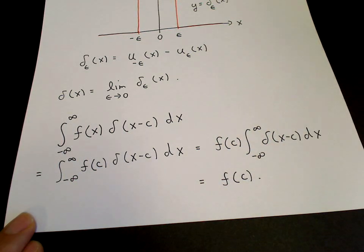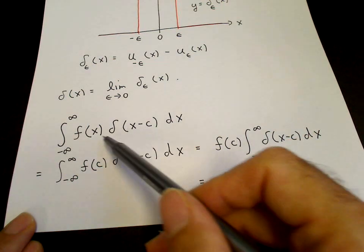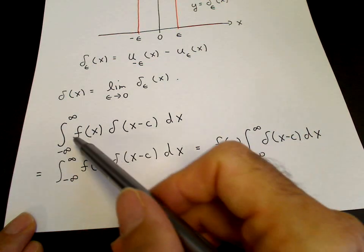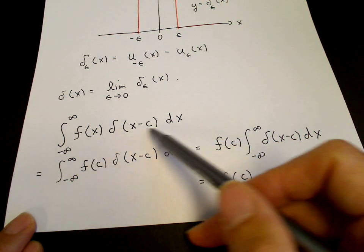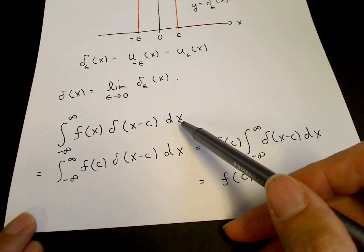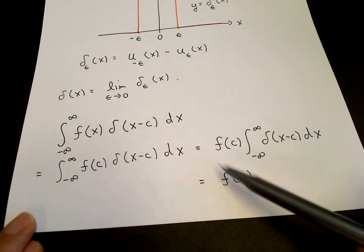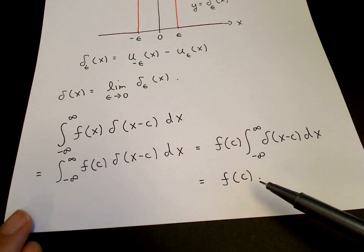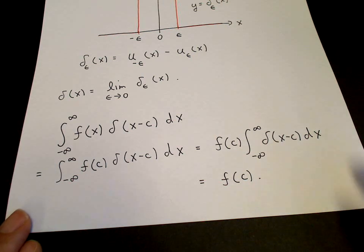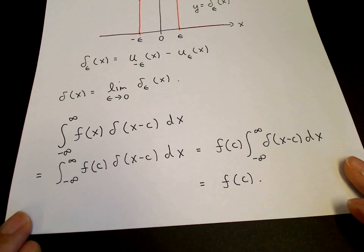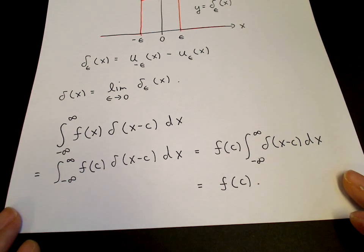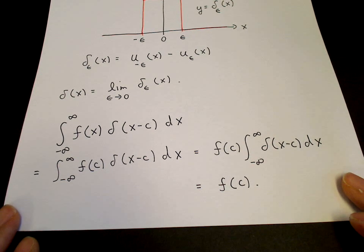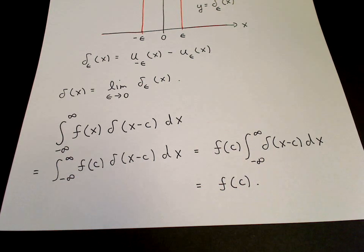So when you take a function, multiply it by a delta function, and integrate, it just picks out the value of the function at the singularity. This is the most important relationship of a delta function, and it's one that is very useful and finds wide application.